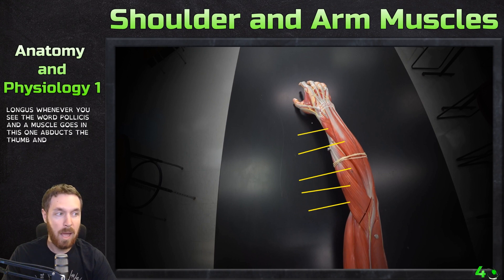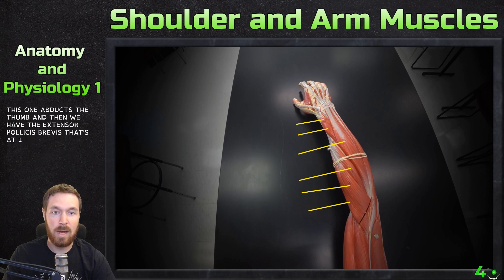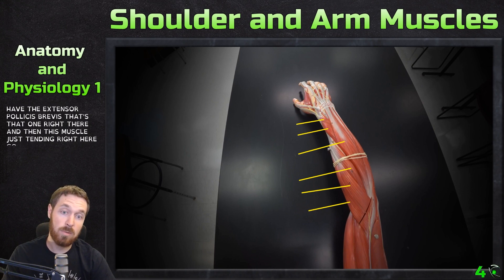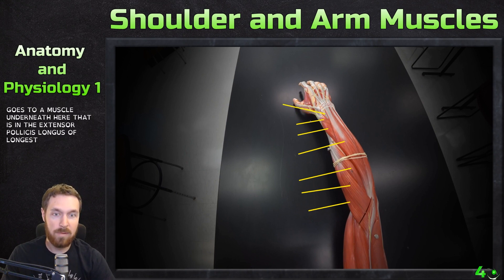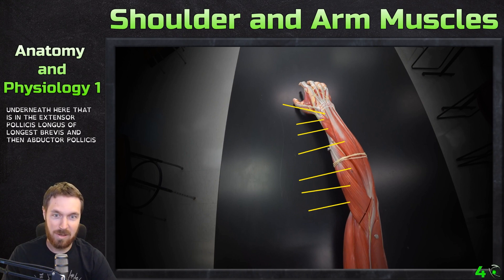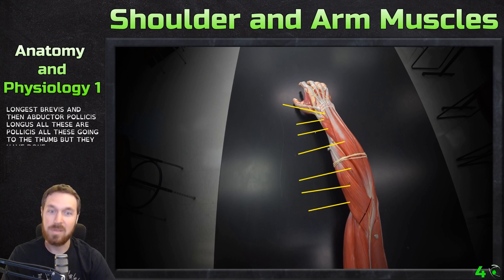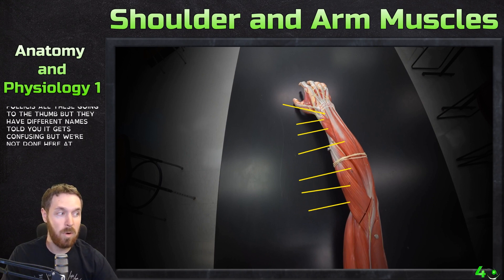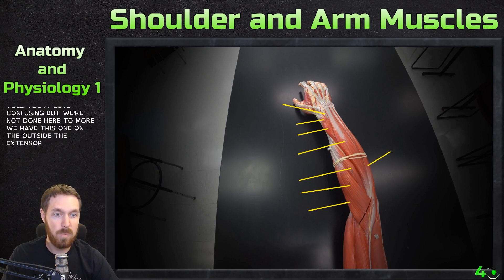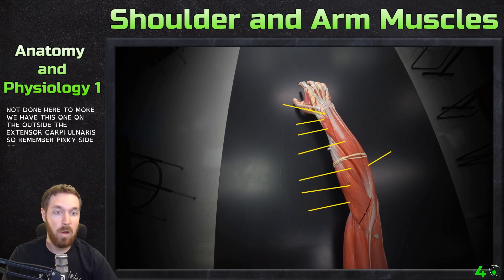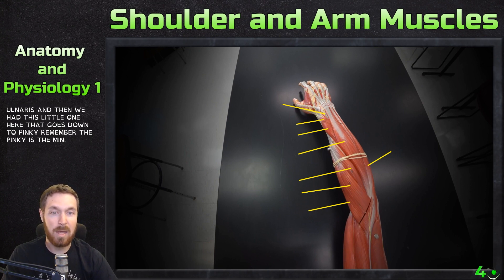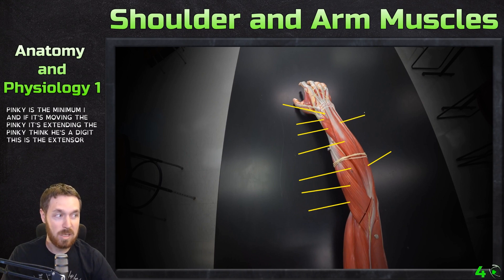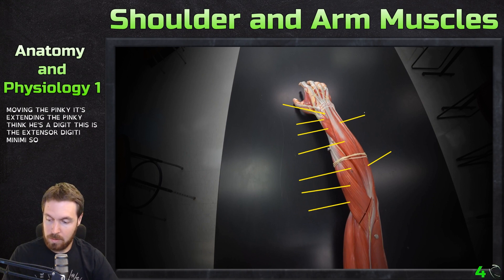Then we have this little one right here — the abductor pollicis longus. Whenever you see 'pollicis' in a muscle name, it goes to the thumb; this one abducts the thumb. Then we have the extensor pollicis brevis right there, and then this tendon goes to a muscle underneath — the extensor pollicis longus. On the other side is the extensor carpi ulnaris — remember the pinky side is where the ulna is — and then this little one going down the pinky is the extensor digiti minimi.